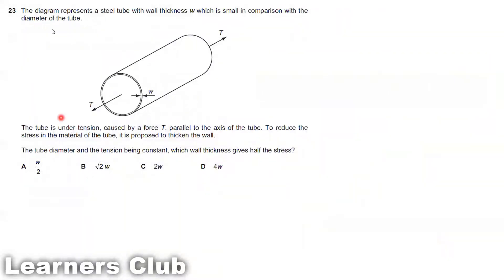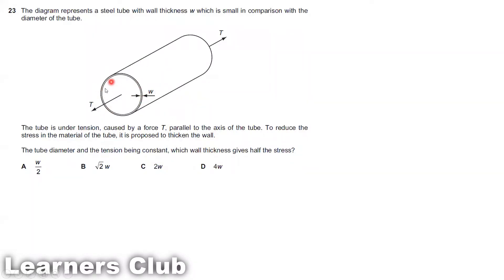Question 23. The diagram represents a steel tube with wall thickness W, which is small in comparison with the diameter of the tube. The tube is under tension caused by a force parallel to the axis of the tube. To reduce the stress of the material, it is proposed to thicken the wall. The tube diameter and the tension are constant. The cross-section of this tube is an annulus region.